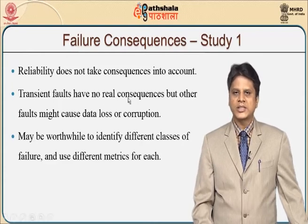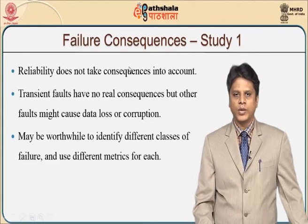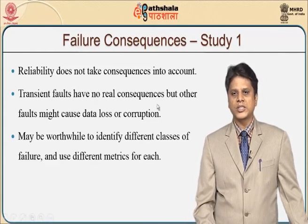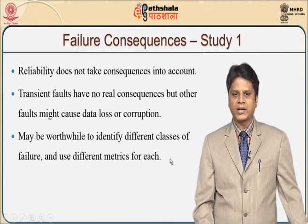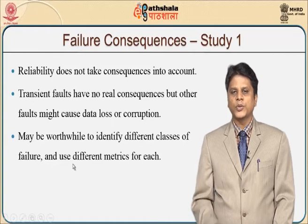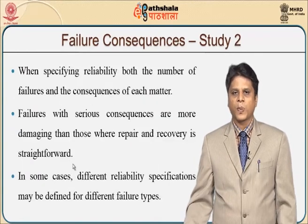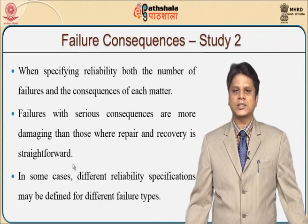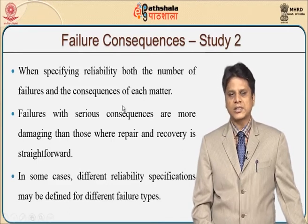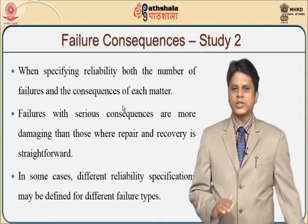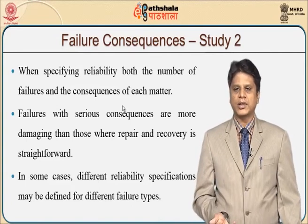Reliability does not take consequences into account — what would be the consequences if failure occurs is not a part of the reliability study. If there are transient faults which have no real consequence, other faults might cause data loss or corruption. It may be worthwhile to identify different classes of failures and use different metrics for each. If we study failure consequences further, it specifies reliability not only as the number of failures but also as the consequences. Software reliability purely looks at the failure free operation of the system rather than looking at the consequences — consequences is a separate study.